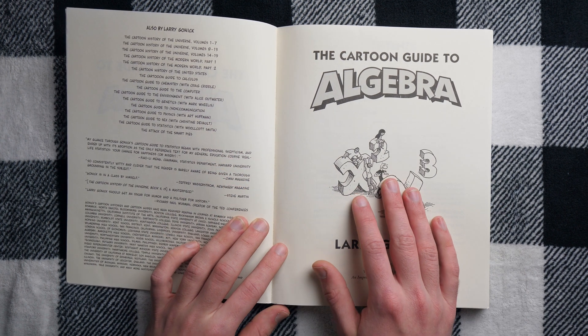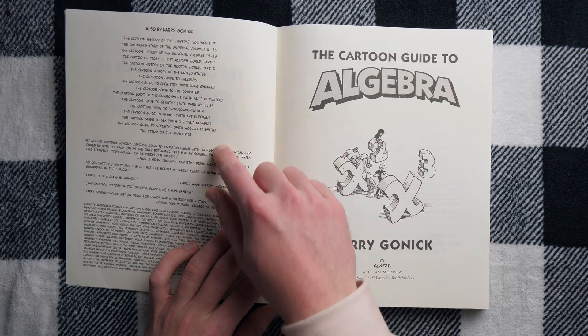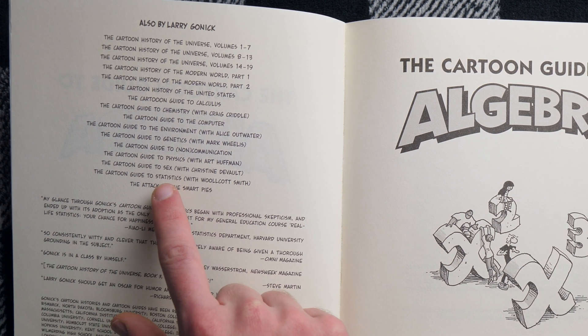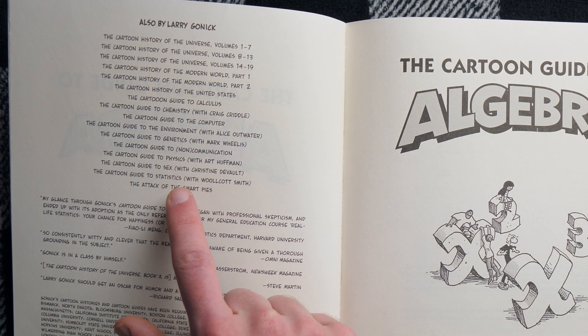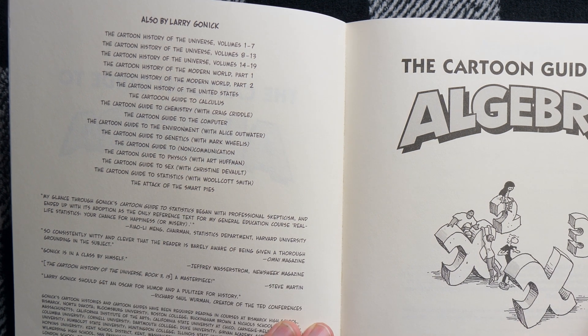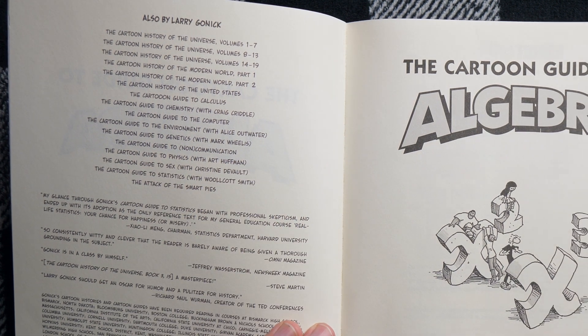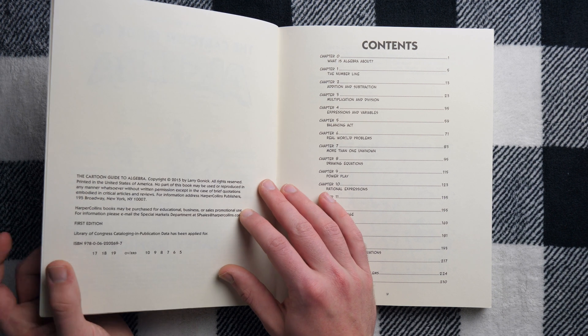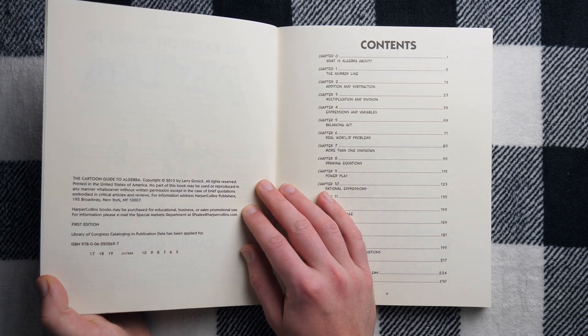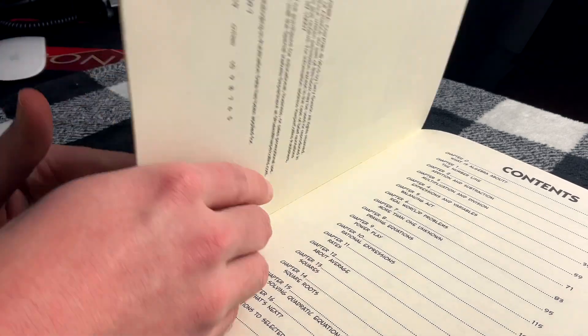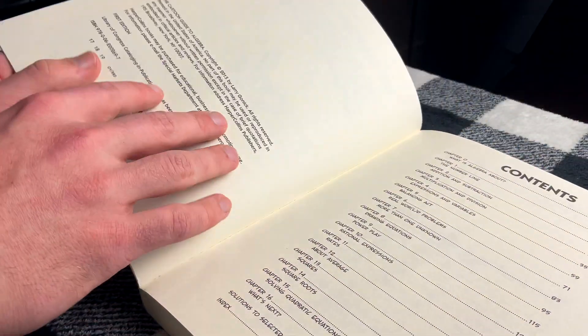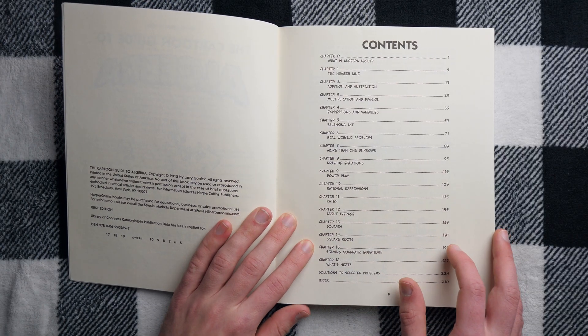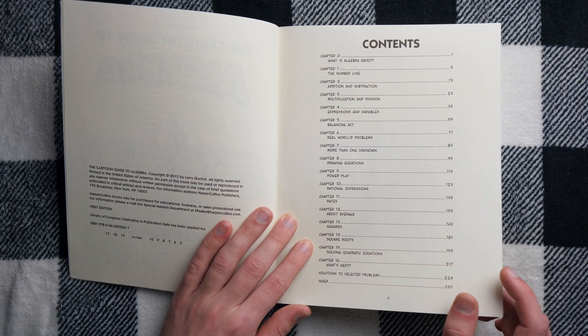You've got some nice reviews here on Larry Gonick's other books and a list of some of them. The cartoon guides to statistics. That would be interesting. We even have the cartoon guide to sex. Wow. Didn't expect that one. The cartoon guide to genetics. The cartoon guide to non-communication. A lot of interesting ones. I definitely would like to pick up the calculus guide.